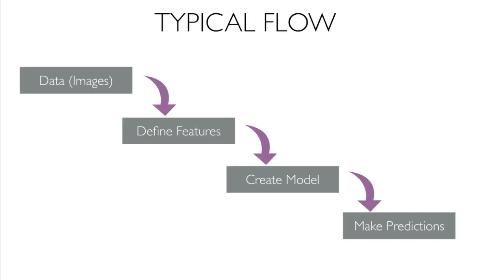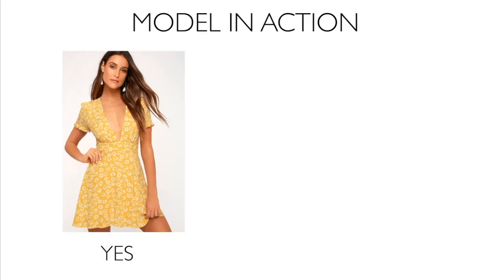The typical flow for machine learning is: you upload images or data — it could be sound or anything — then you define what the features are, and then you create a model. You can have hundreds of models depending on the product. For a fashion app, you'd have jackets, pants, swimsuits, shorts — hundreds of items — and each item can have its own model defining its features. Then the machine learning algorithm is ready to make predictions on the next uploaded image.